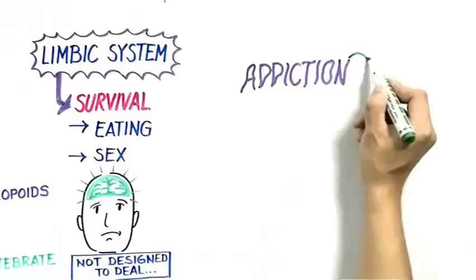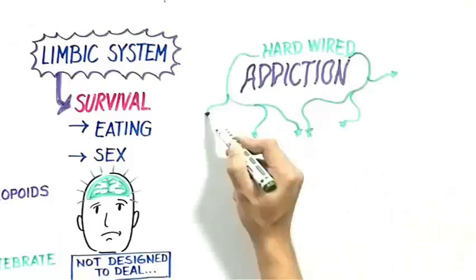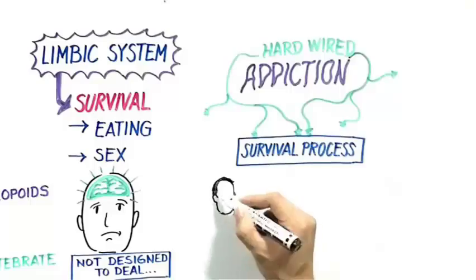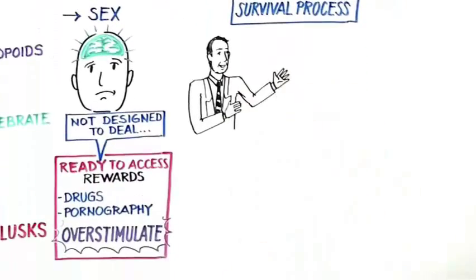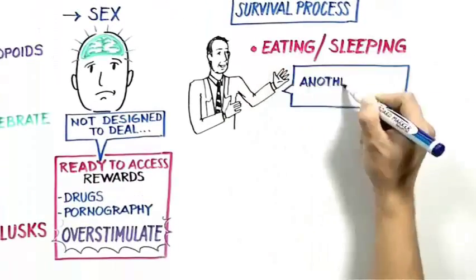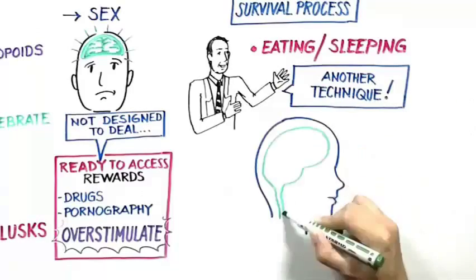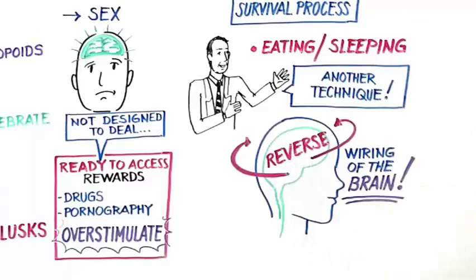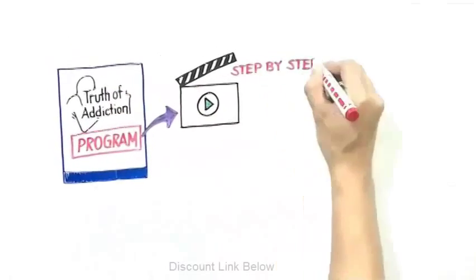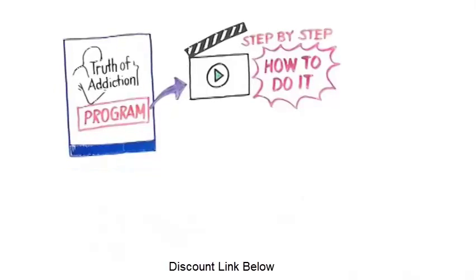Addictions, whatever they may be, are hardwired as a survival process. It has become a part of life just as eating or sleeping. But there is another scientifically proven technique that is shown to reverse this wiring of the brain. And included in the Truth of Addiction program, there is a video that explains step-by-step how to do it.